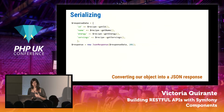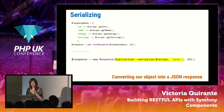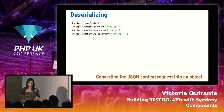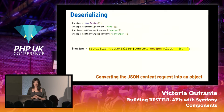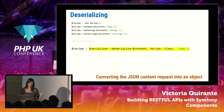Instead of writing all that code, you just call: please serialize this recipe, converting our object into a JSON response. In the opposite direction — deserializing — you do something similar: tell the Serializer to deserialize this content into my Recipe class from JSON format. Just one line instead of lots of them.